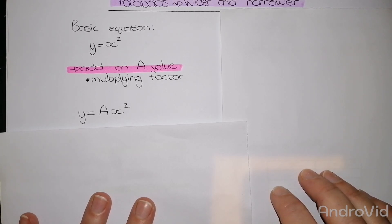With the basic equation my a value is 1. When it is wider or narrower, my a value either goes higher than 1 or lower than 1.